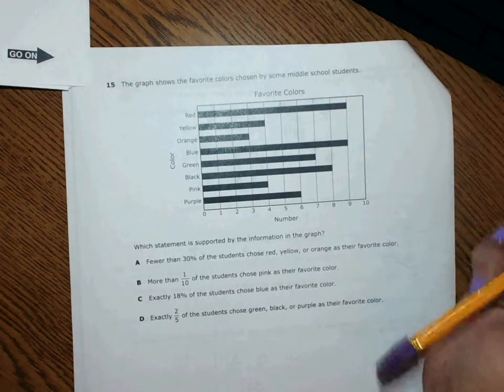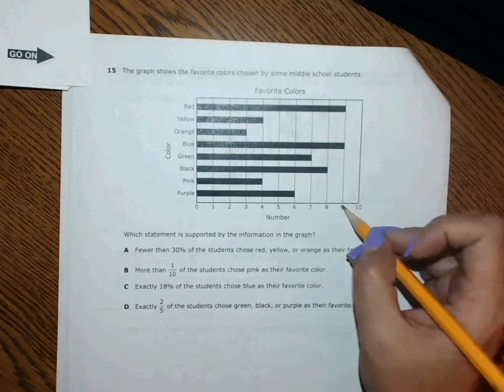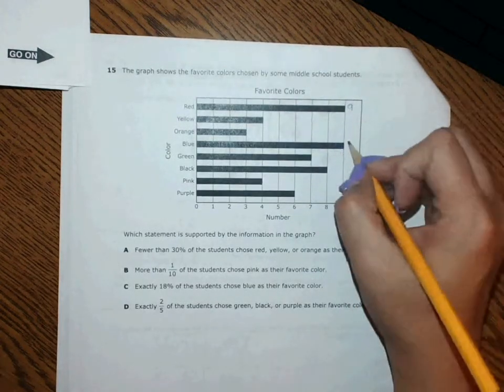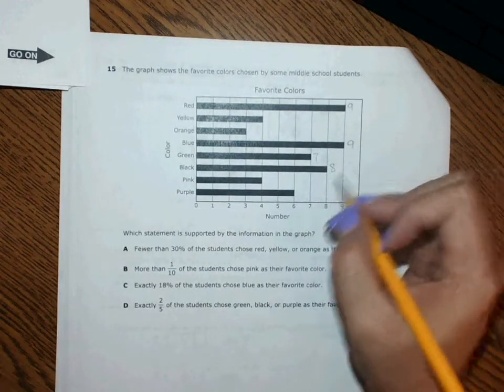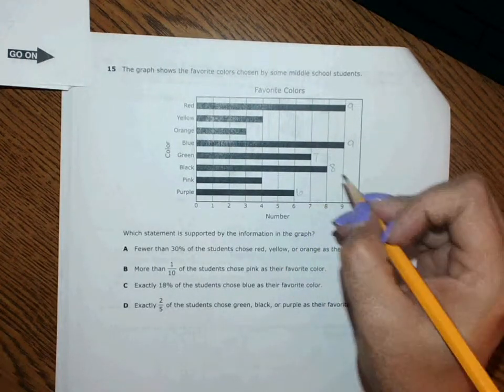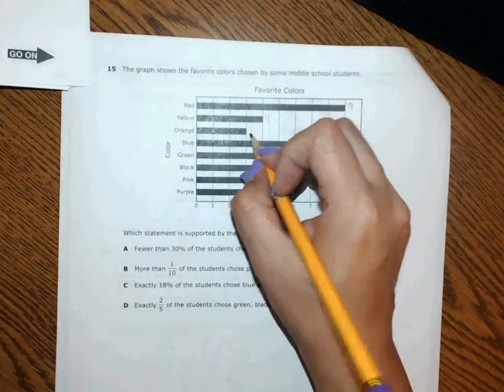Typically the first thing I want to do is check out what each bar has a value of. So I would write the values next to each one. That way I only have to do it one time and I don't have to continue to look and potentially make a mistake.